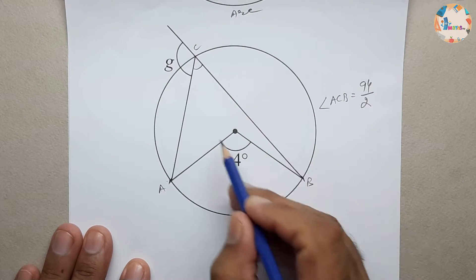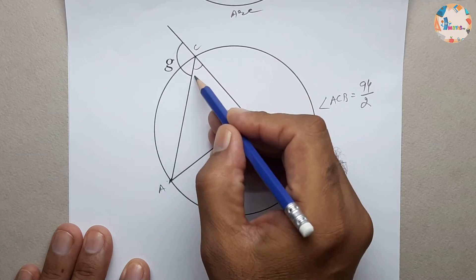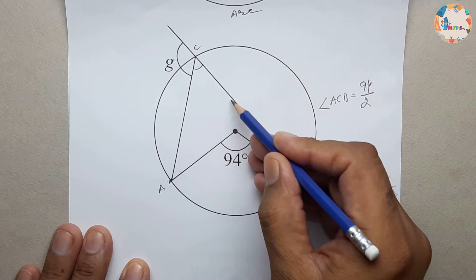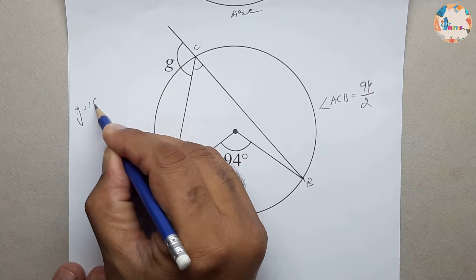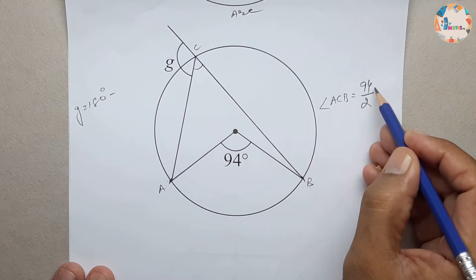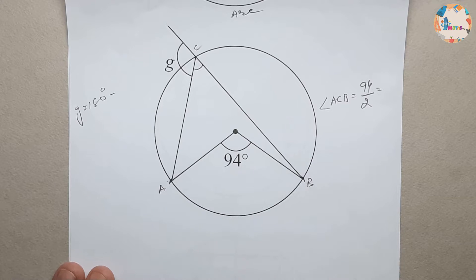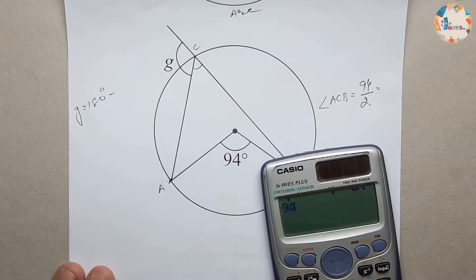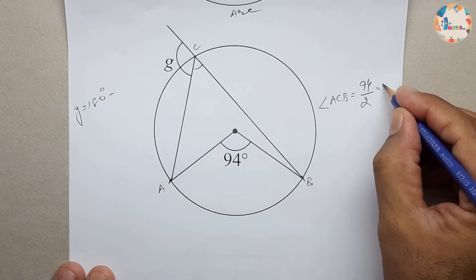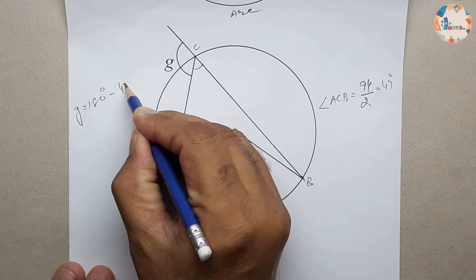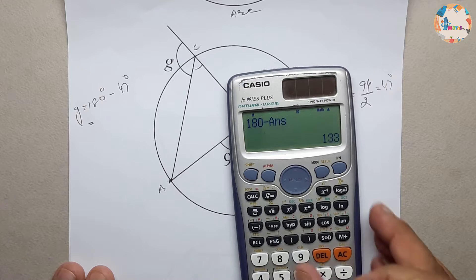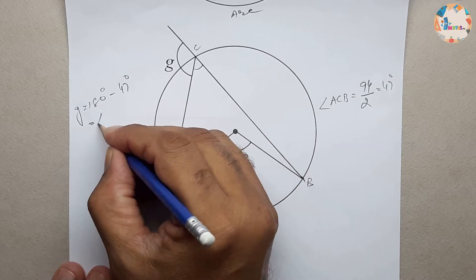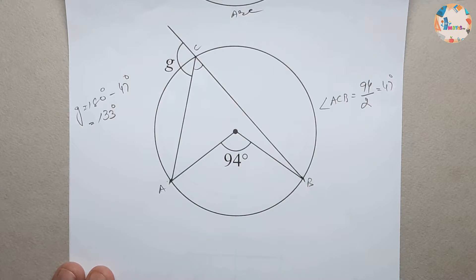If we also need to find angle G, we know this is a straight line, so the straight line angle is 180 degrees. G equals 180 degrees minus 94 divided by 2. Since 94 divided by 2 is 47, that angle is 47. So G equals 180 minus 47, which gives 133 degrees. G is equal to 133 degrees. This example also uses the same rule.